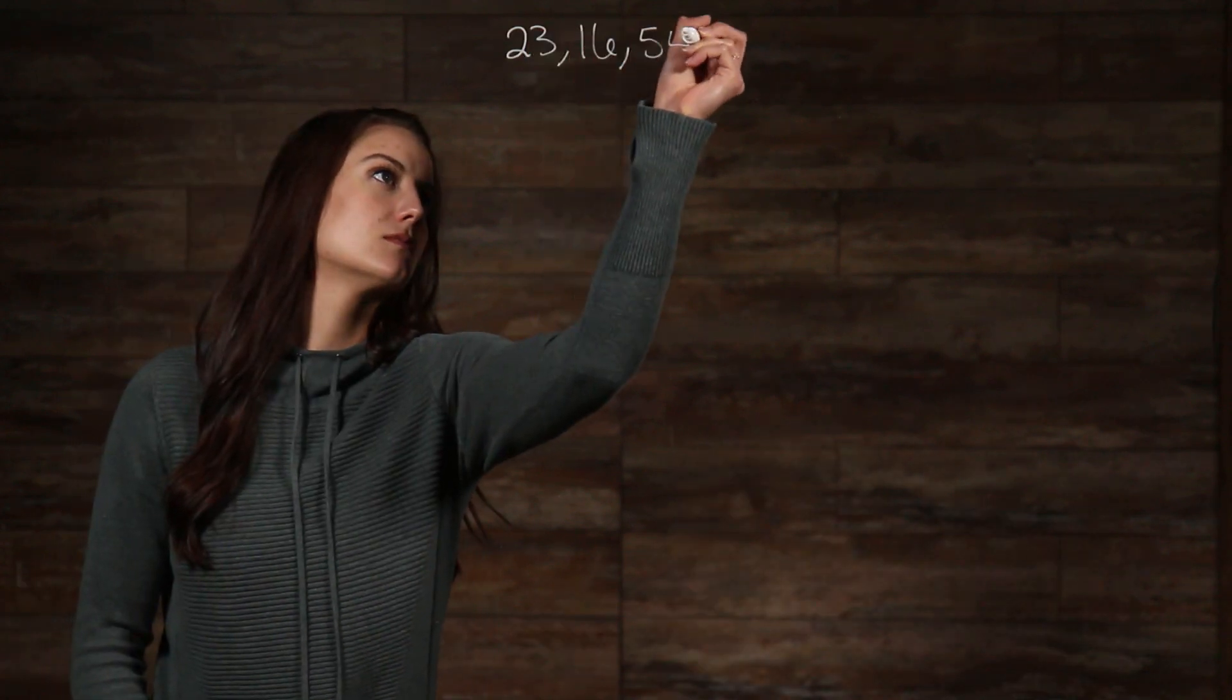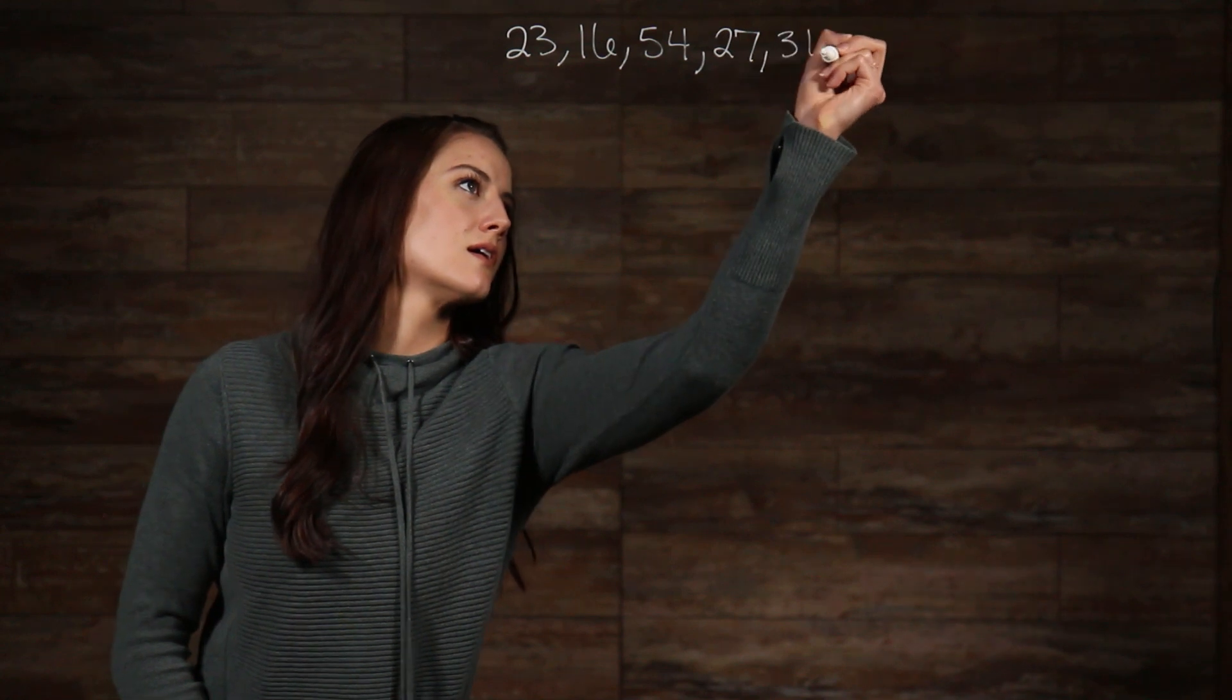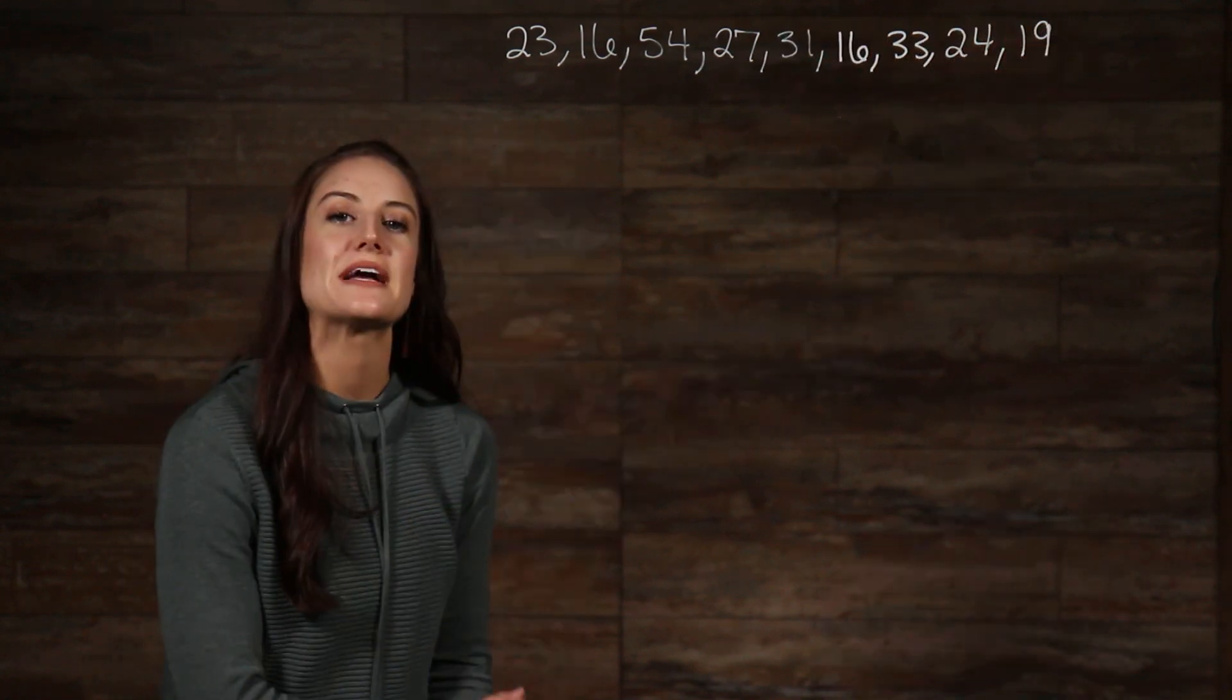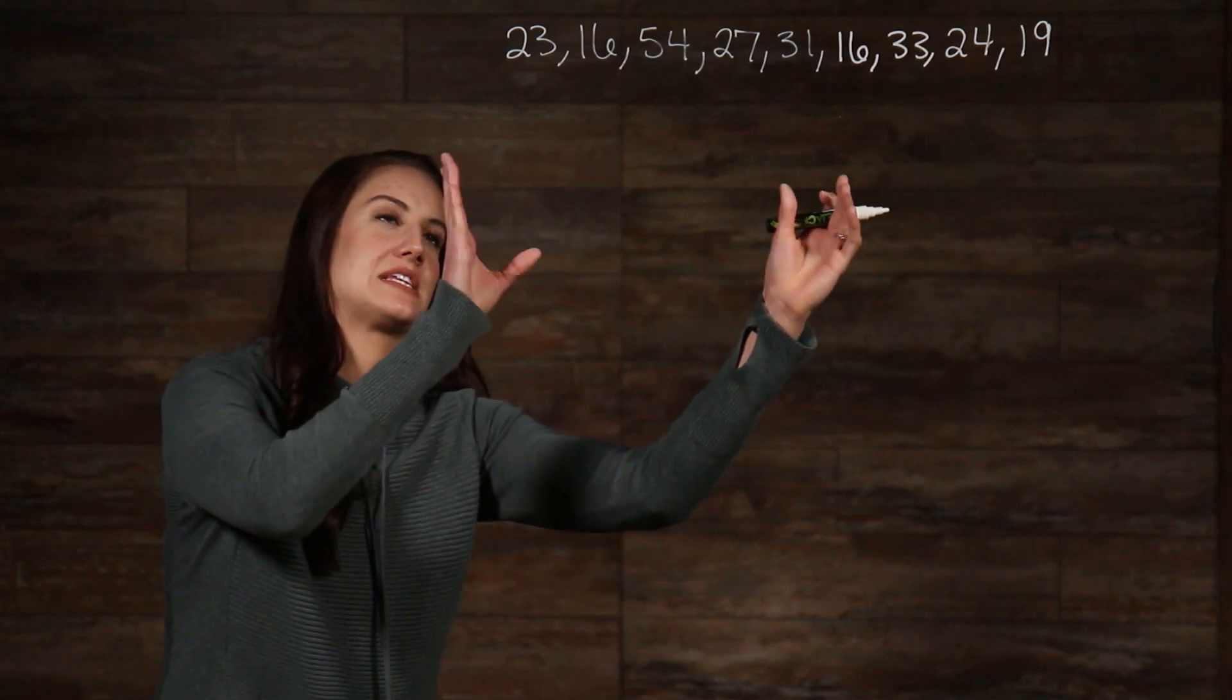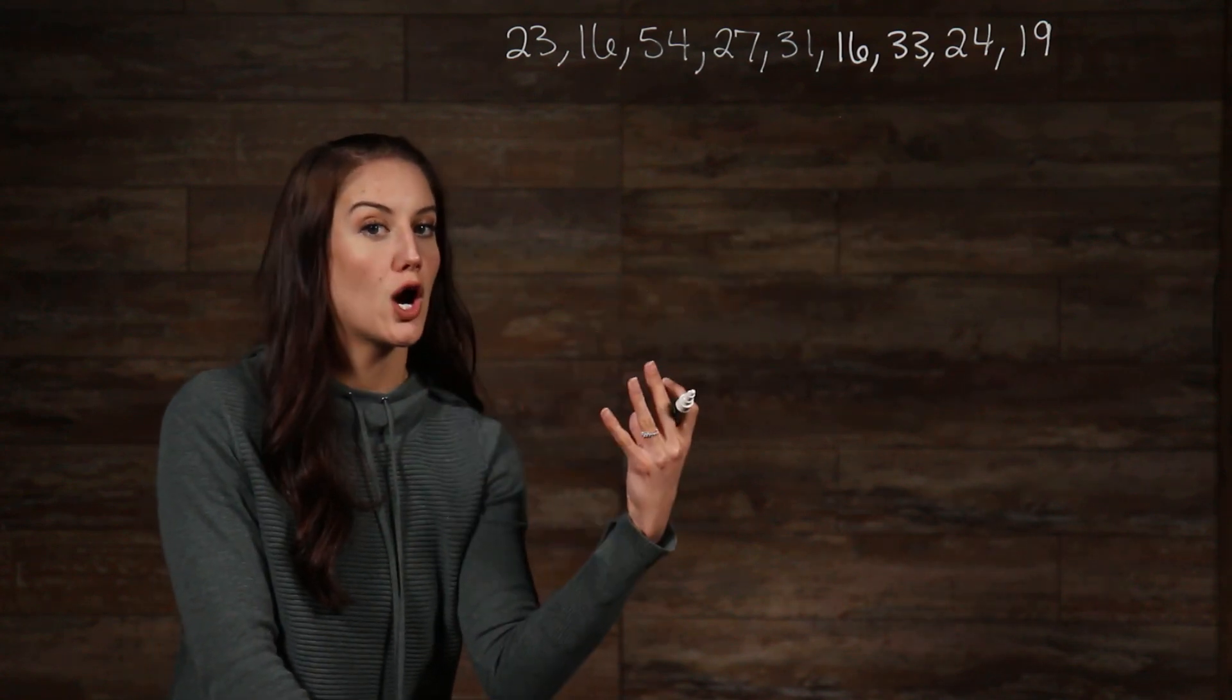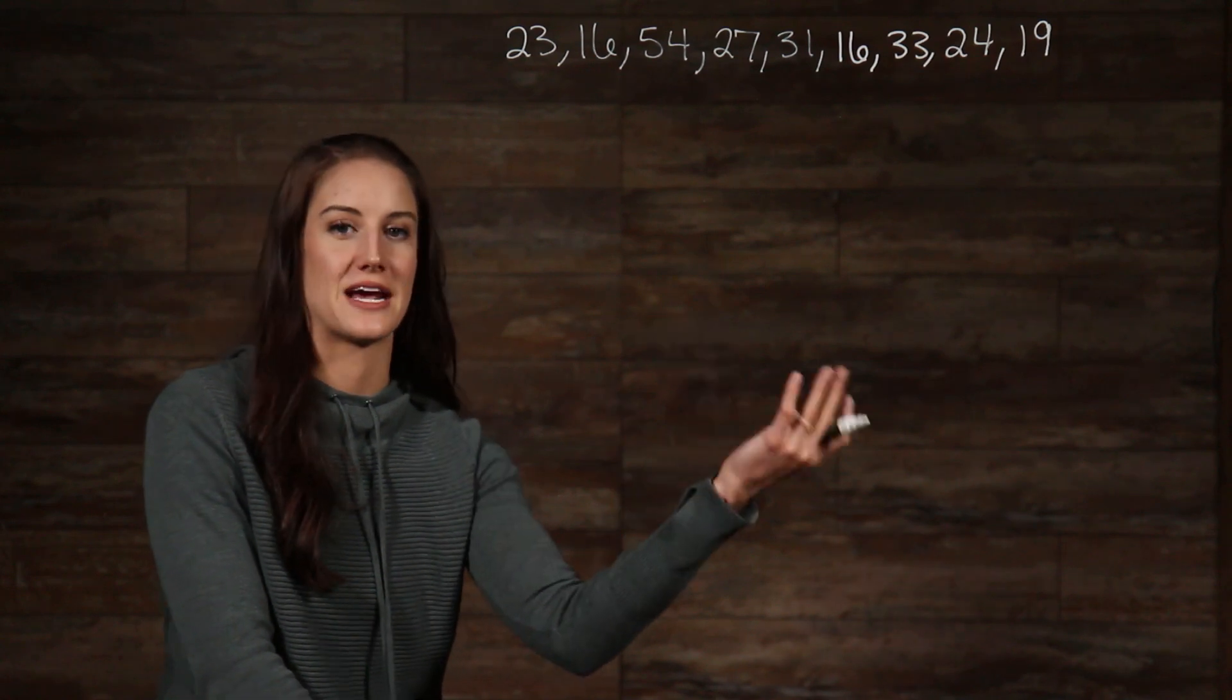First, the mean. Let's say we have a list of nine numbers. So, to find the mean, we need to add up all the numbers in the list, then divide by the amount of numbers that there are, which we know is nine, because we have nine numbers.